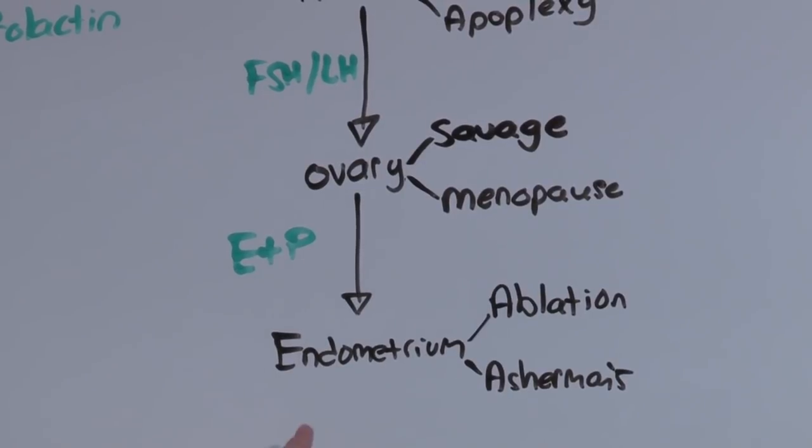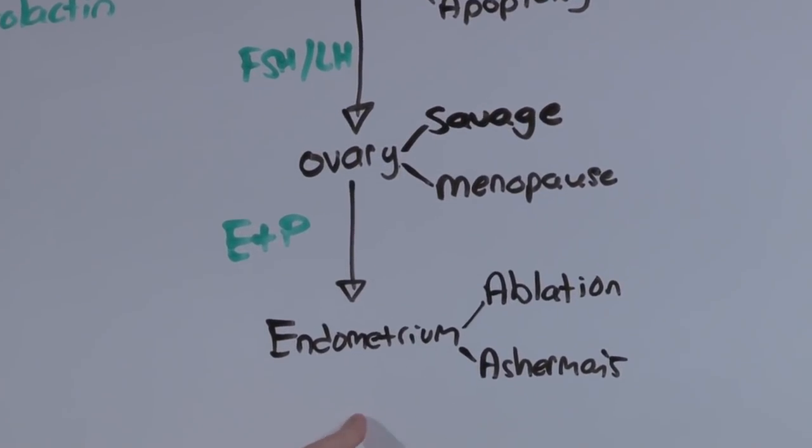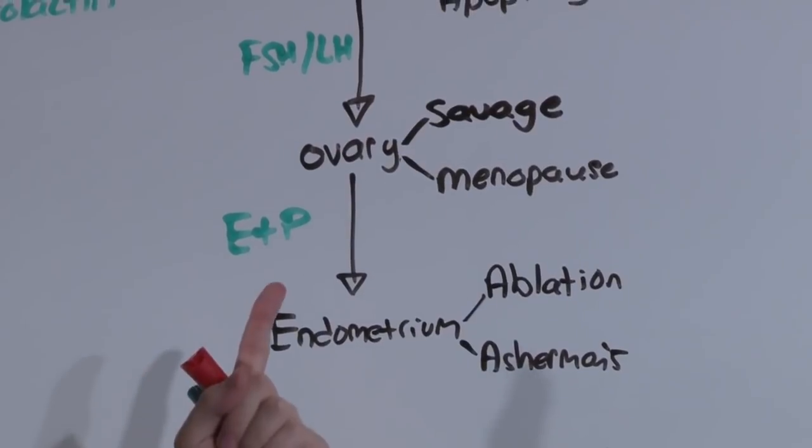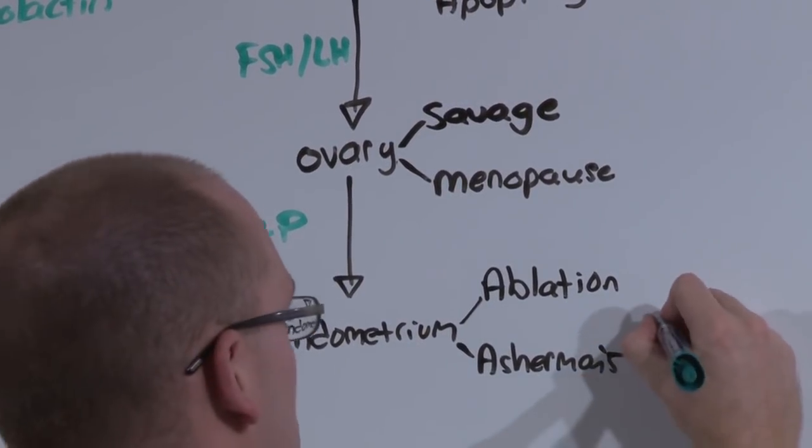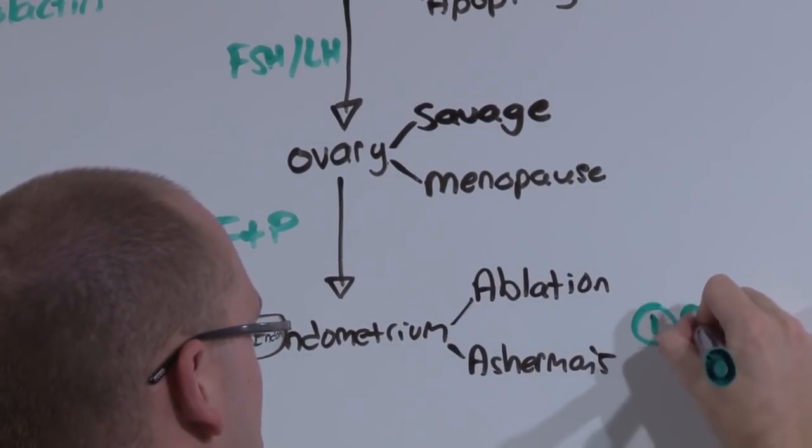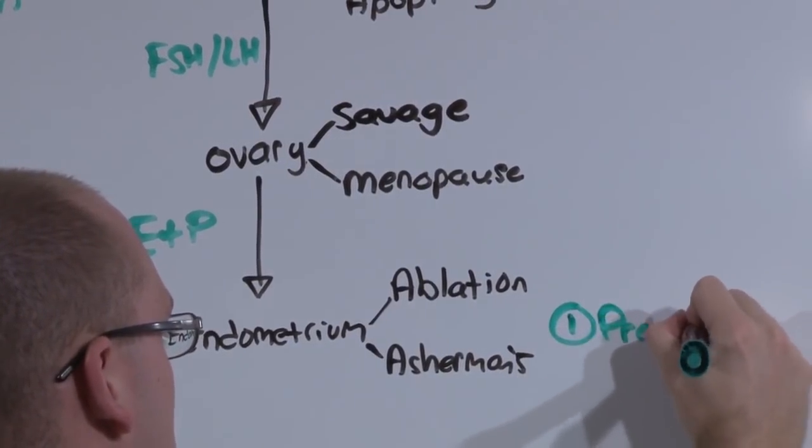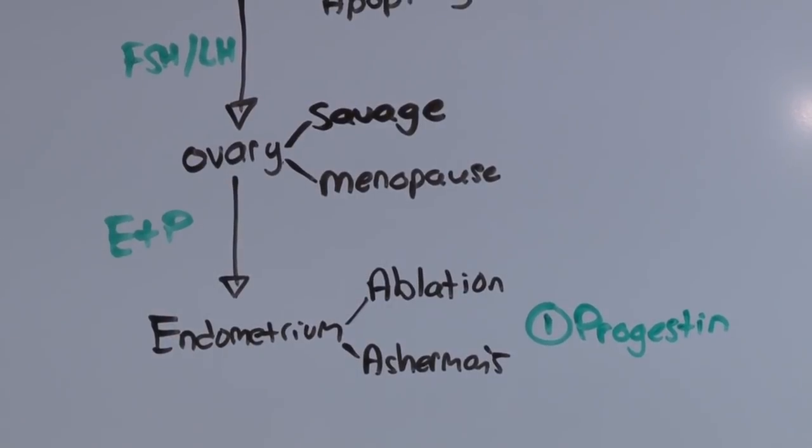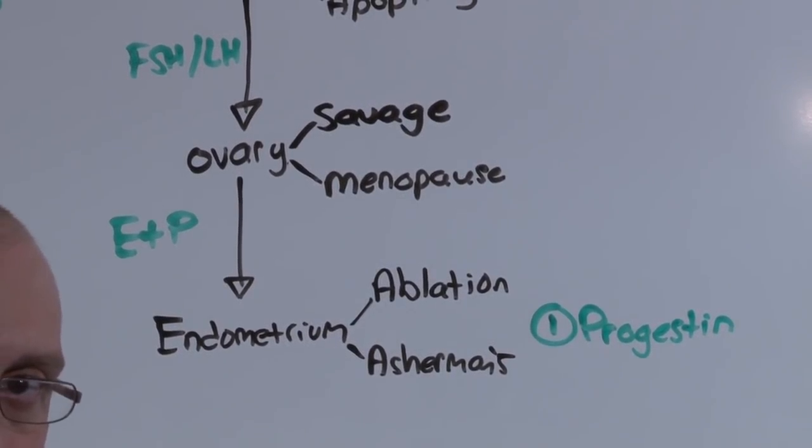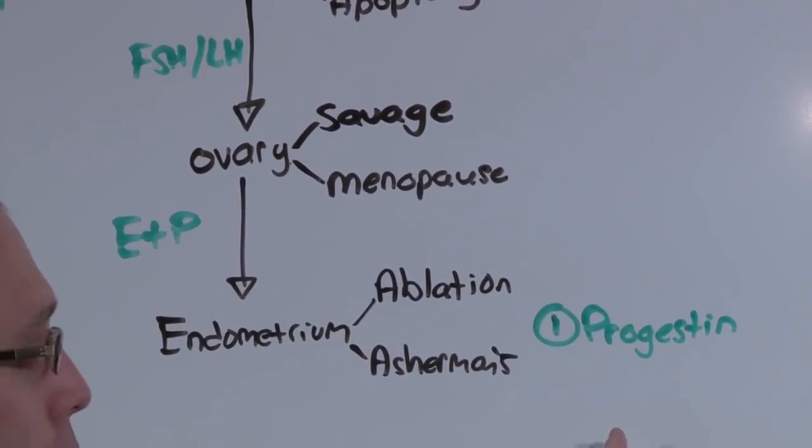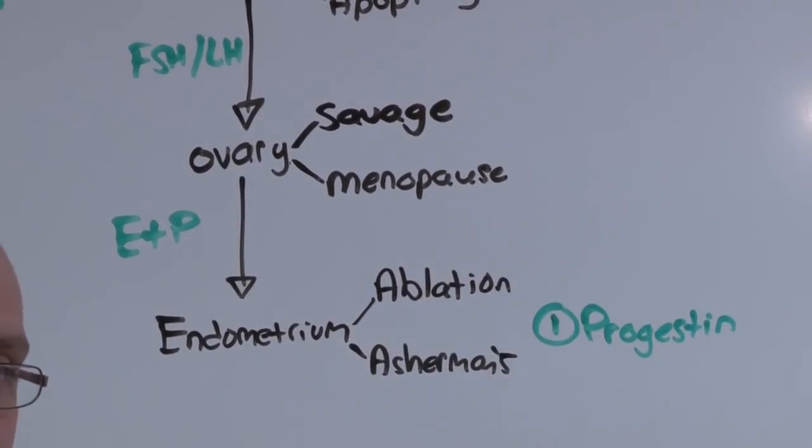To evaluate the axis, we start at the bottom and work our way up. We ask the question, can the endometrium bleed? We answer that question first with a progestin challenge. Progestin will take an already developed endometrium and just cause it to slough off. You only have to go higher on the chain if your test is negative.